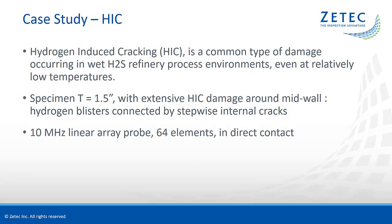In the first case study, we will evaluate the performance of the TFM technique on hydrogen-induced cracking. This is a common type of damage occurring in wet hydrogen sulfide refinery process environments, even at relatively low temperatures. Hydrogen-induced cracking is a kind of blistering damage that tends to form parallel to the surface. It becomes really damaging when it becomes extensive, or when it gives rise to cracking that propagates into a wall, or when it begins to go stepwise through the wall.